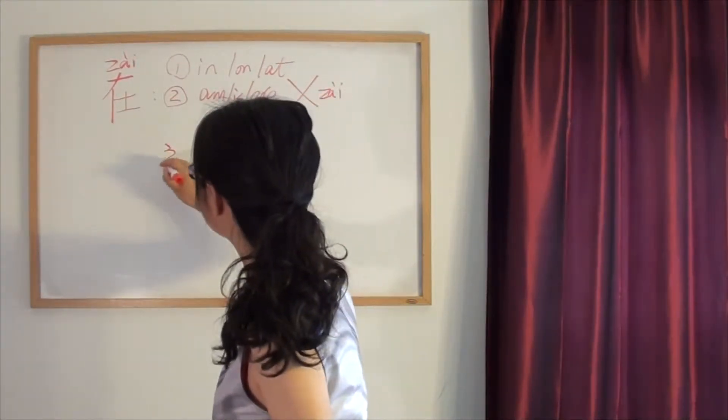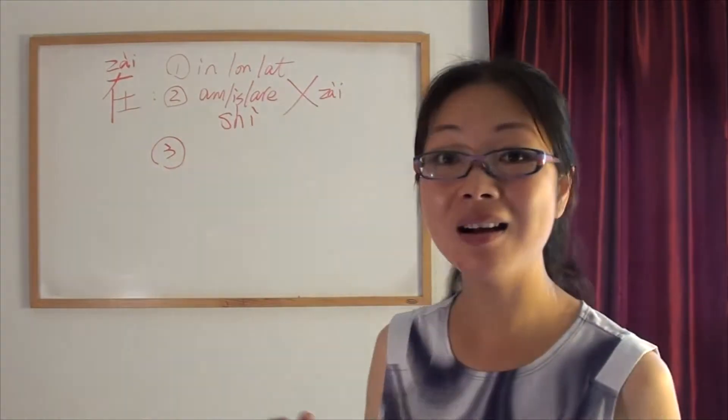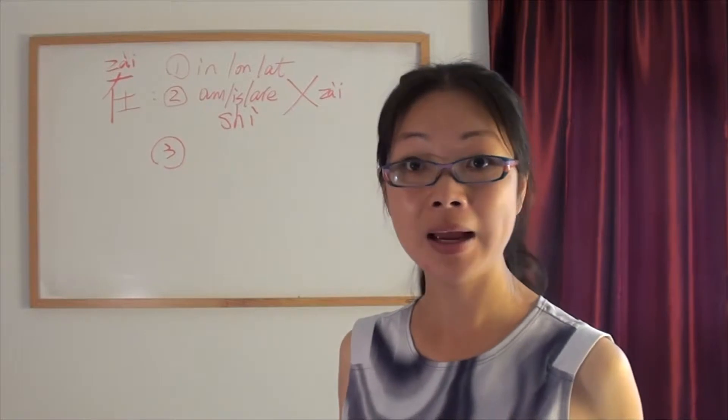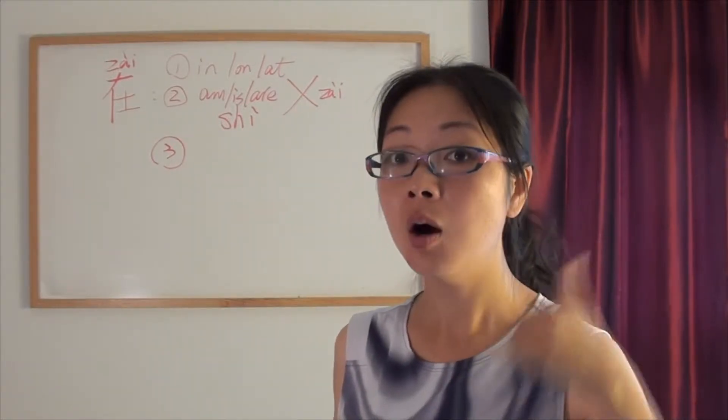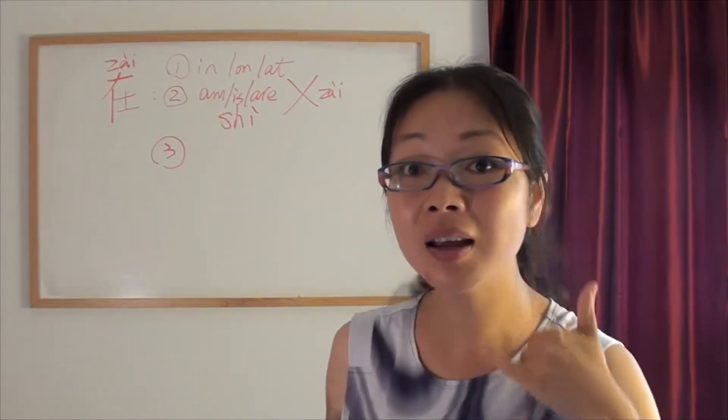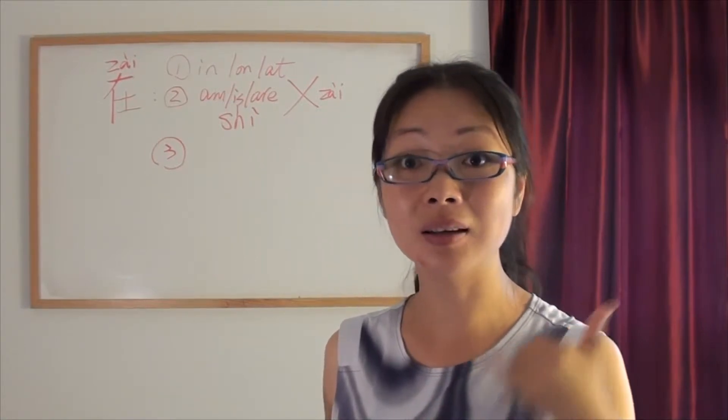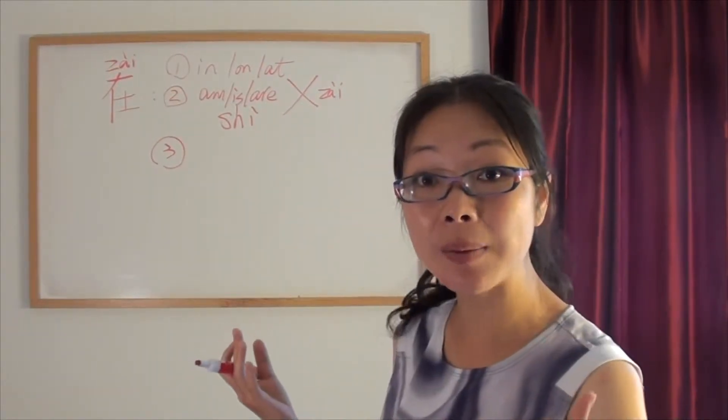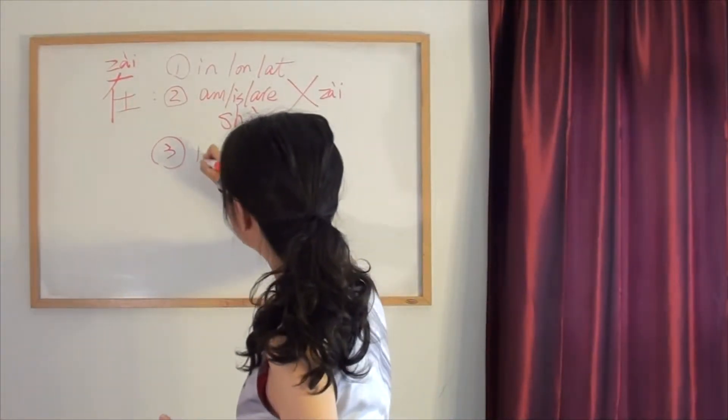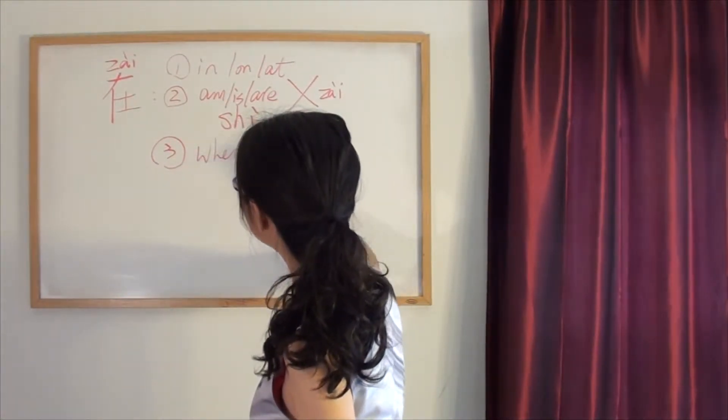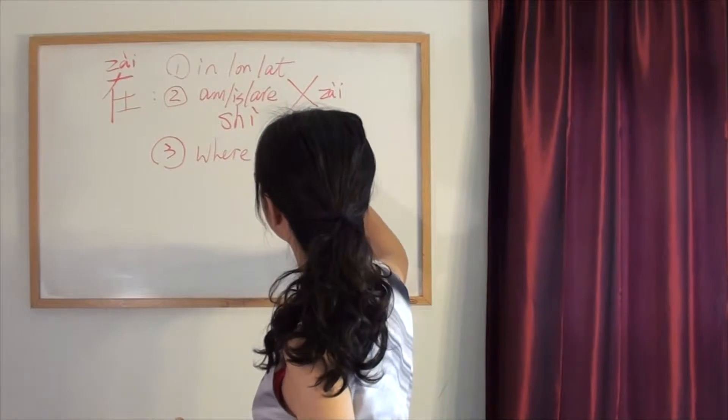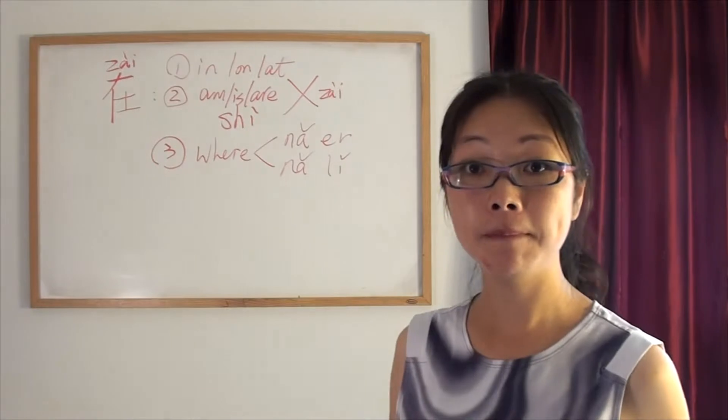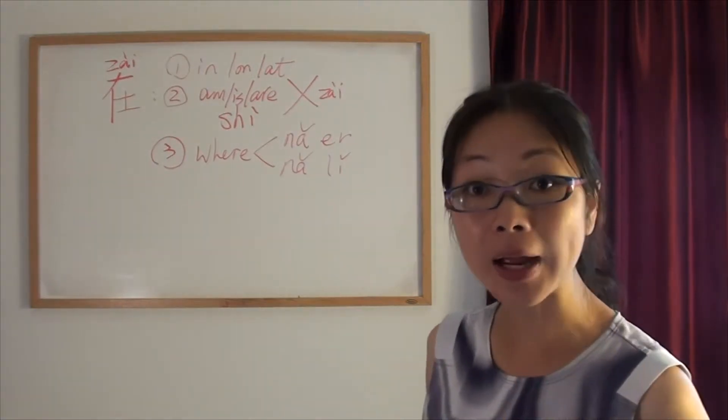Number three. Since we learned how to say I am at home, how to ask people where are you? Where is my luggage? Where is the customer? How to ask people? Then we learned how to say where. Do you remember two ways to say: 哪儿 or 哪里? Both ways are correct.